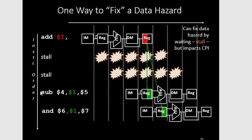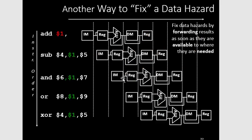However, stalling affects the CPI and reduces throughput. The main reason we use pipelining is to make more effective and efficient use of time, but if we have to insert many stall cycles, we are not utilizing pipelining efficiently.